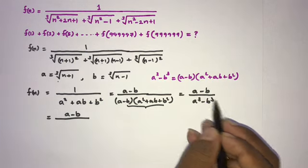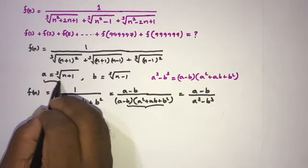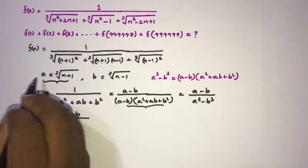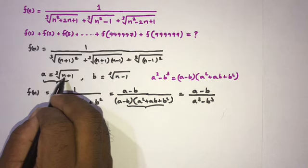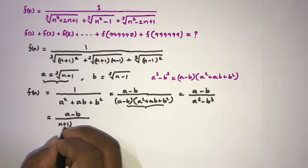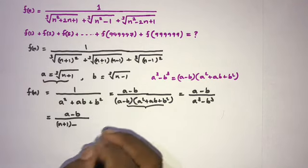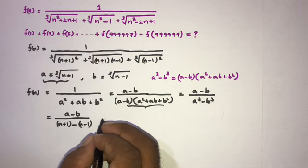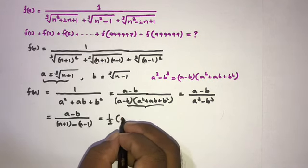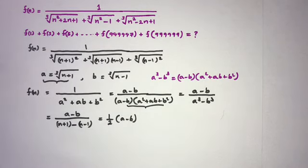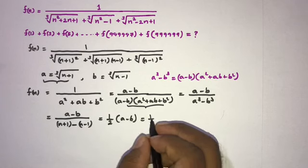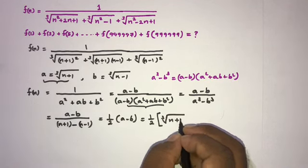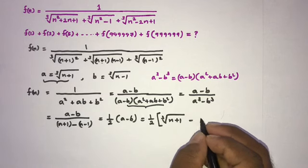Now, taking the third power of both sides of our substitution: a³ = n + 1 and b³ = n - 1. So a³ - b³ = (n+1) - (n-1) = 2. Therefore f(n) simplifies to one-half times (a - b), which is one-half times [cube root of (n+1) minus cube root of (n-1)].